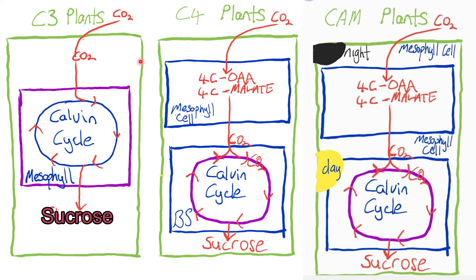Now let us look at C3 and CAM plants. One of the similarities between C3 and CAM plants is that they both operate within the mesophyll cells. However, a key difference is that in C3 plants a three-carbon molecule is formed, whereas in CAM plants a four-carbon molecule is formed. Also, in CAM plants, although everything occurs within the mesophyll cell, part of the process occurs at night and part occurs during the day.